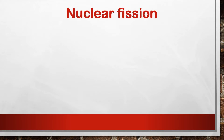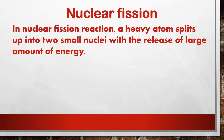We will start with nuclear fission reaction. In nuclear fission reaction, a heavy atom splits up into two small nuclei with the release of a large amount of energy. One of the very simple and basic examples for nuclear fission reaction is the atomic bomb — atomic blasts, hydrogen blasts, uranium blasts. Whenever an atom blasts, it releases a lot of light energy, sound energy, and heat energy.